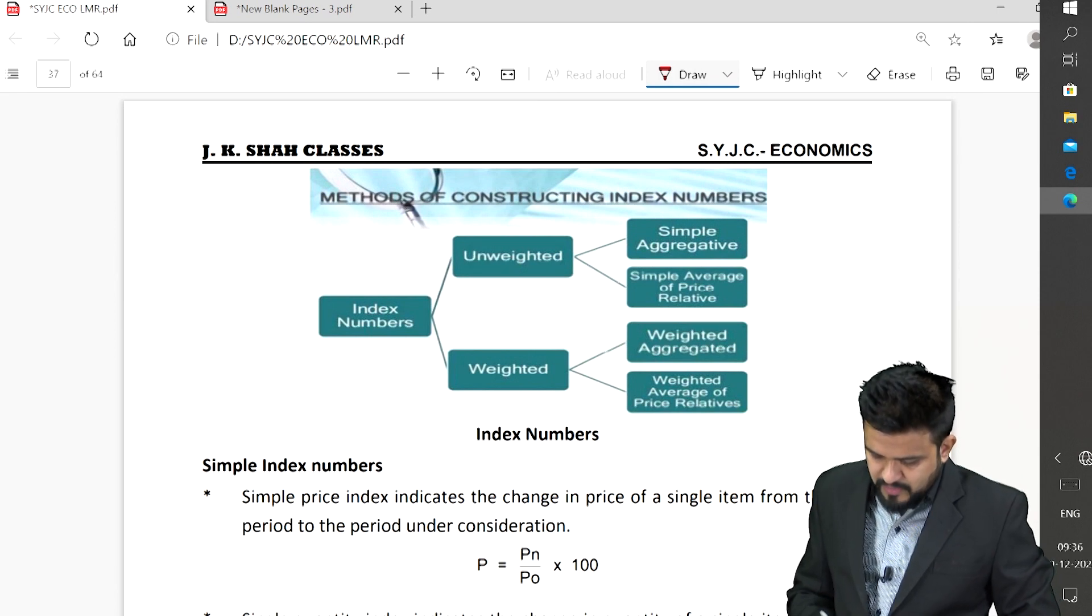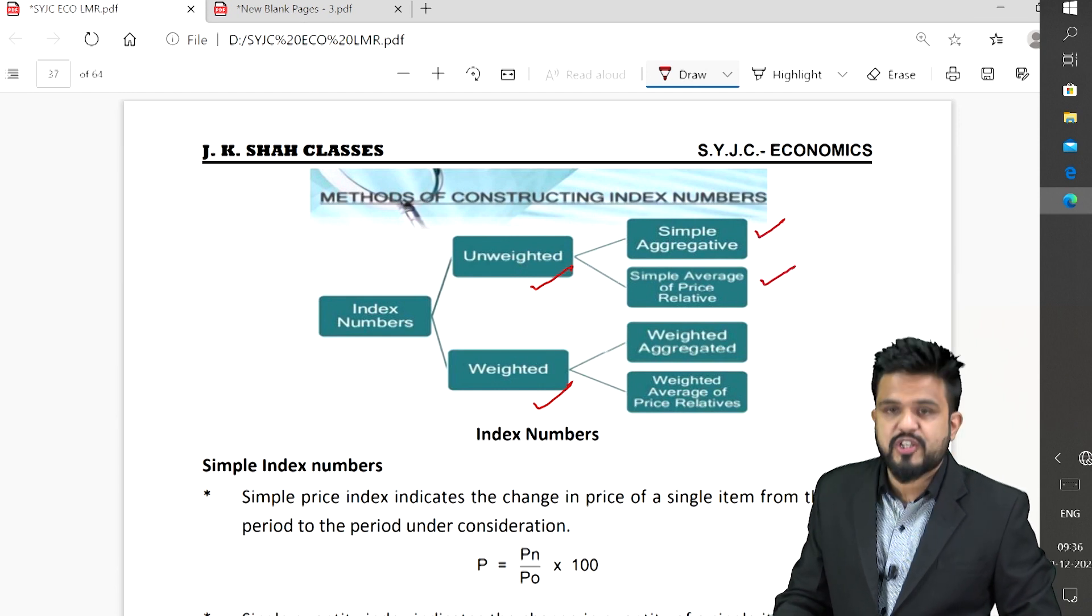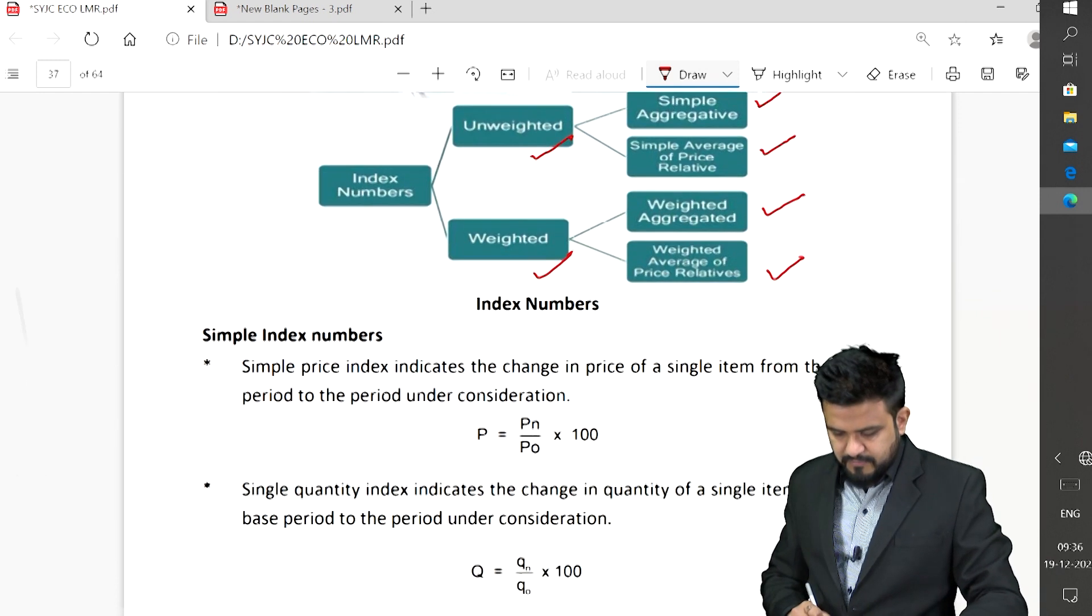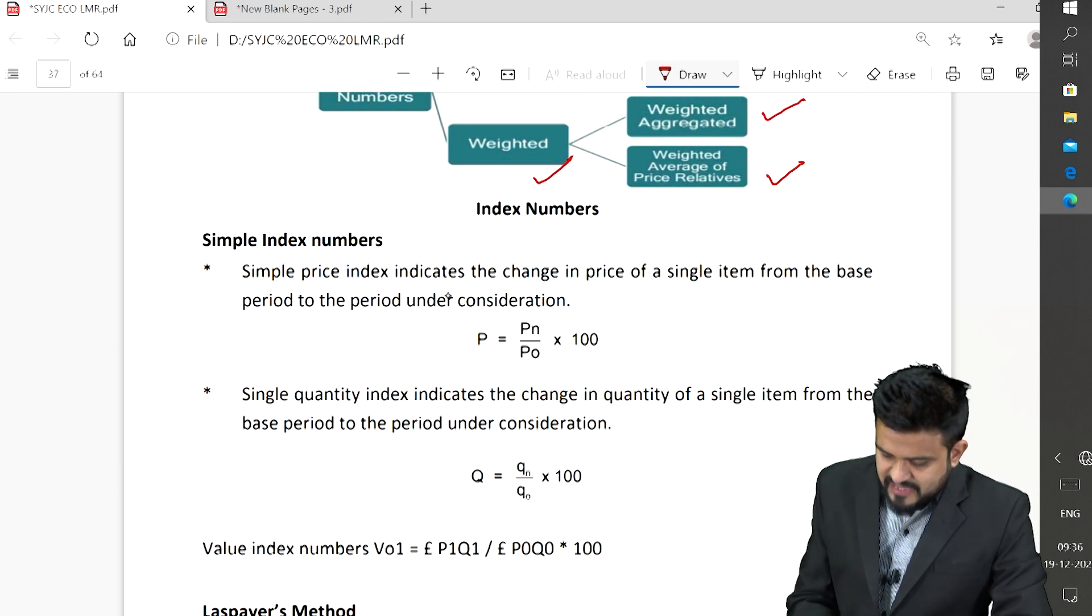Methods for constructing index numbers: unweighted and weighted. In unweighted you have simple aggregative, simple average of price relative. In weighted you have weighted aggregate, weighted average price relative. Simple price index indicates the change in price of a single item from the base year: P_n upon P_0 into 100.